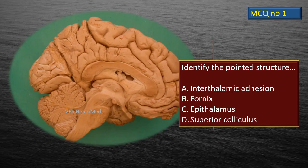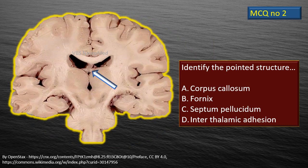First MCQ: here is a mid-sagittal section of the cerebrum and the brainstem. There is a structure being pointed out by a flashing arrow. Identify that structure. The answers are given at the end of the video. MCQ number 2: here is a coronal section of the cerebrum and brainstem. Identify the pointed structure.